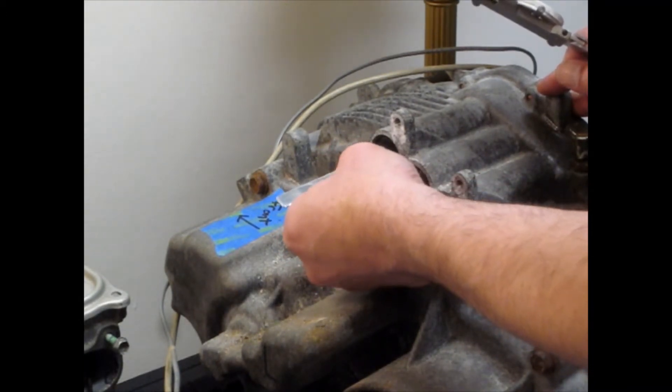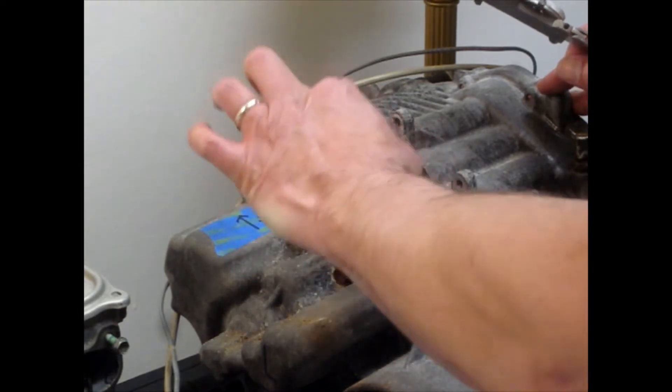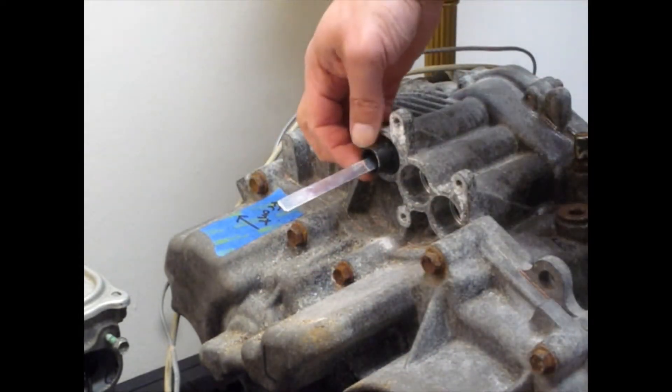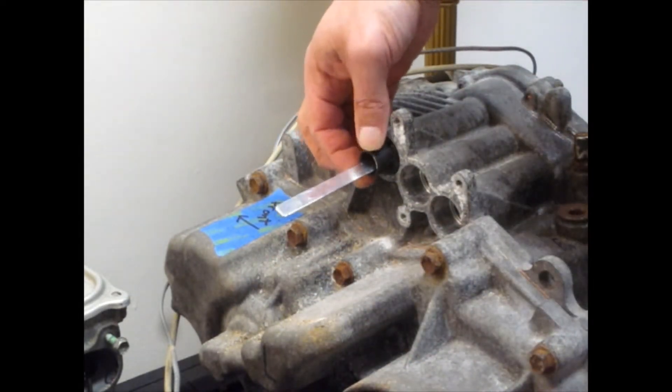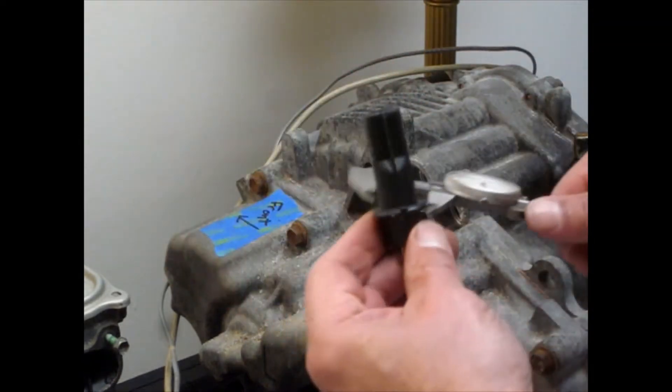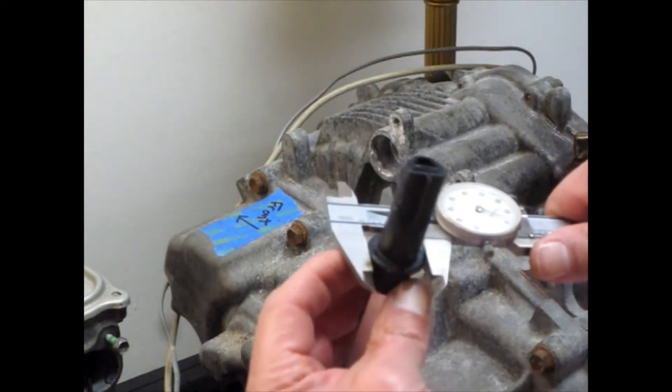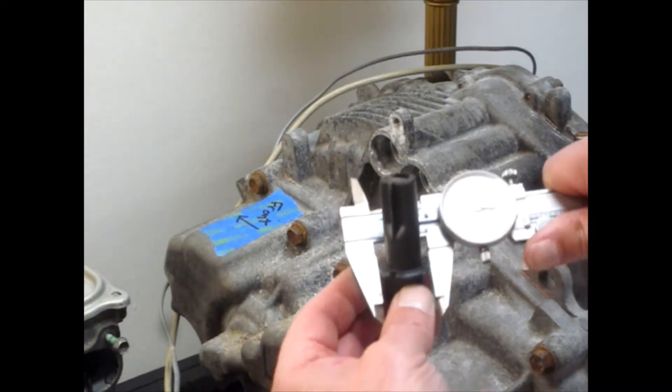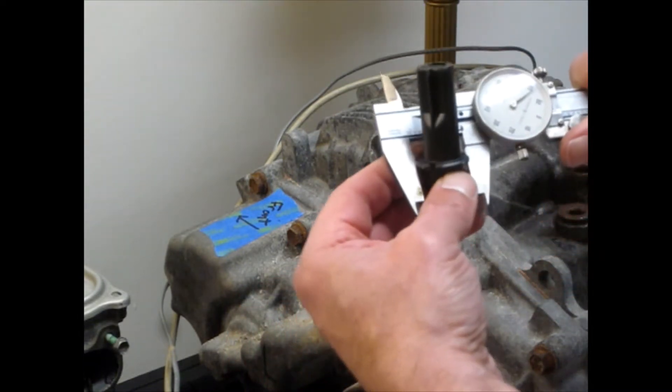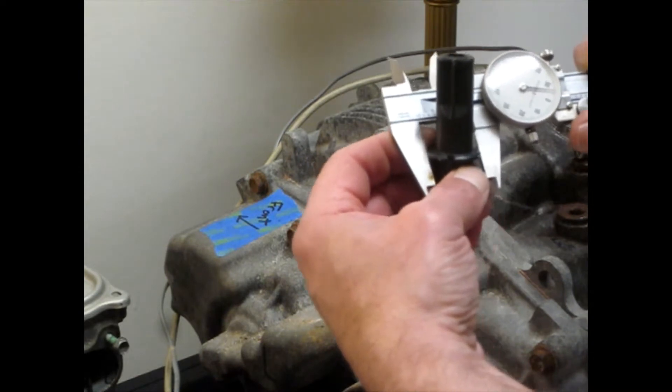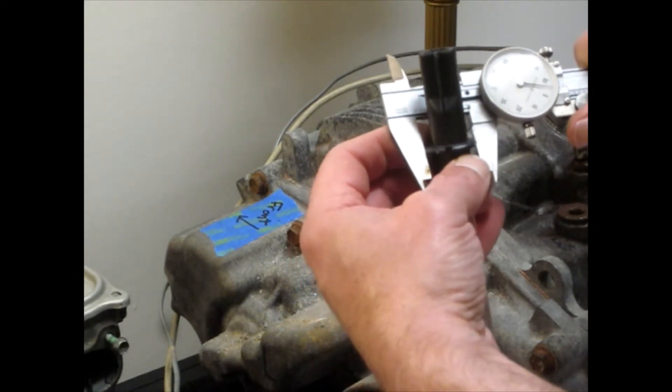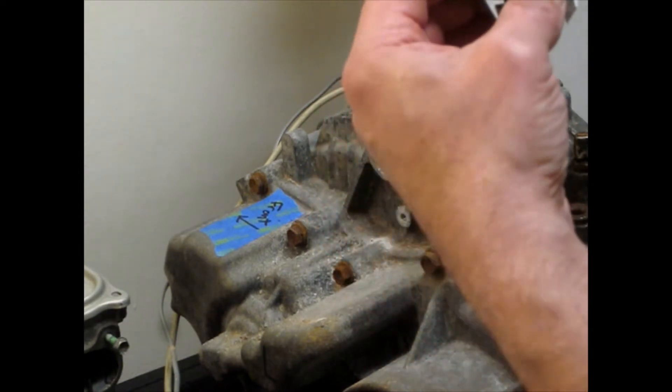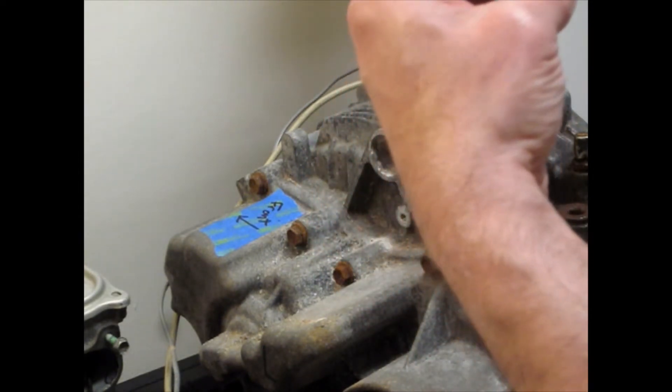So we know that there's clearance there. It's the diameter of that guy is essentially, and again for all you people that use the real system I apologize, I don't have real system measuring tools. Looks like one point, very close to one inch, just a shade under one inch.